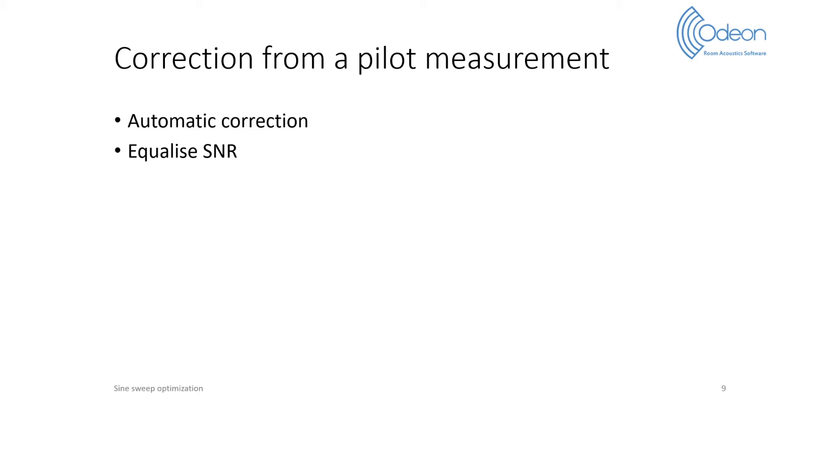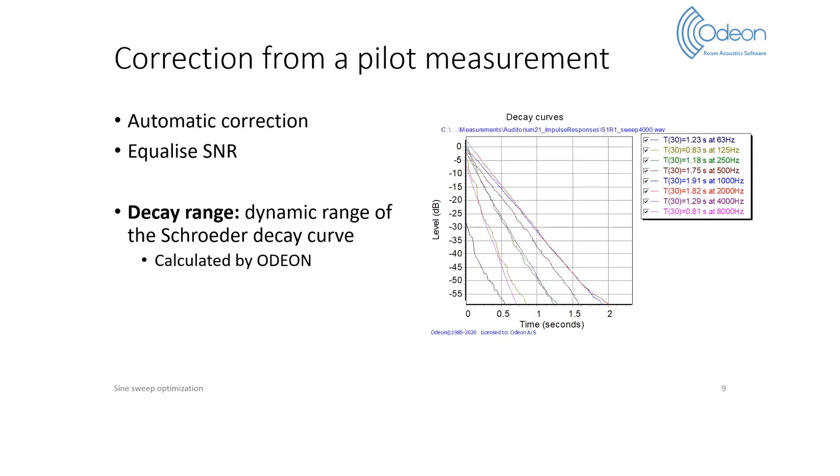so we first need a measure to represent the SNR. It has been chosen to use the decay range, which is the dynamic range of the Schroeder decay curve. Indeed, the decay range is automatically calculated per octave band in ODEON from impulse response measurements.